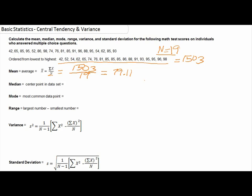Most of the time we want to round to two decimal places, which is why we only have two decimal places here. So the mean is 79.11.